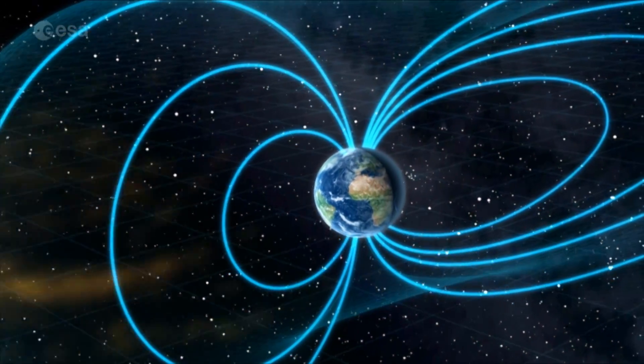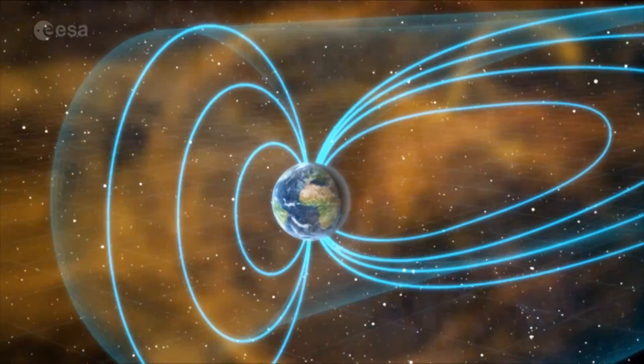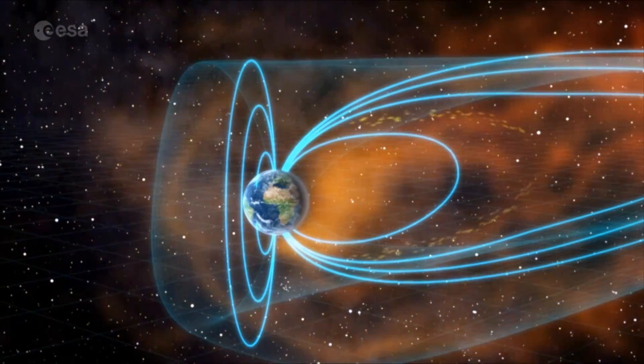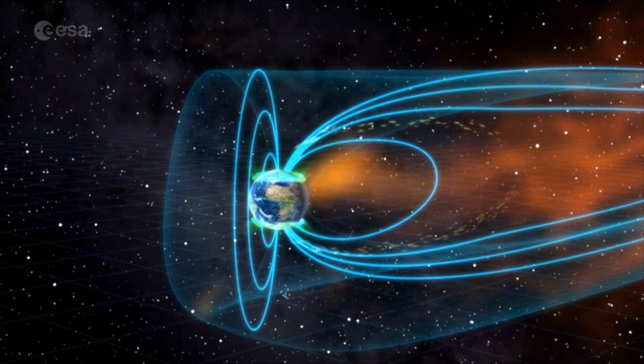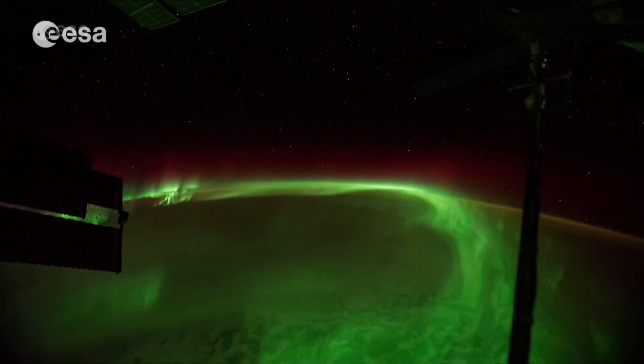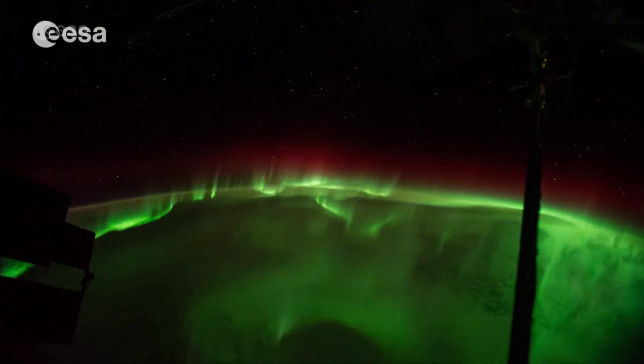The Earth is part of space, part of the solar system of course, and particularly when the charged particle environment changes, the magnetic field around the Earth actually reacts to these changes. Some of these particles enter inside the magnetic field, they change the conditions inside the magnetic field, and these variations can actually have quite dramatic impacts on the infrastructure that we utilize in our everyday life.